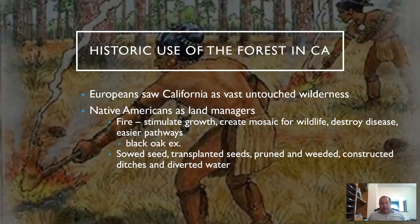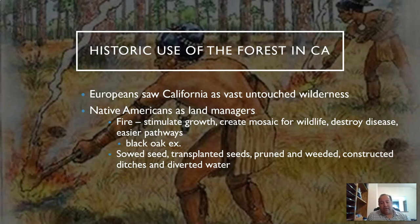We have a long Native American tradition of Native Americans as land managers, using fire to stimulate growth, creating a mosaic for wildlife, destroying diseases, and creating easier pathways to hunt. We know this because we can look at a species like California black oak and understand how it came to be.